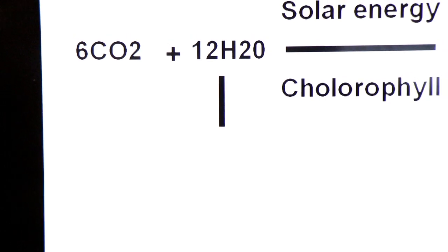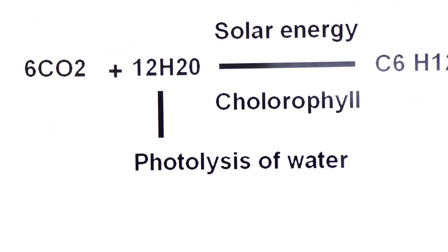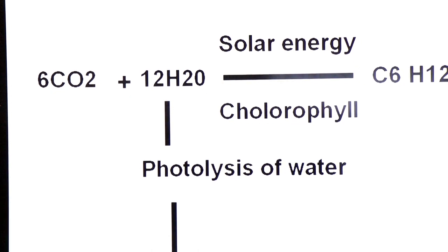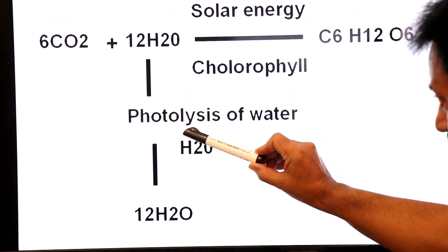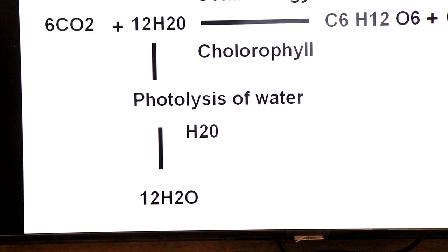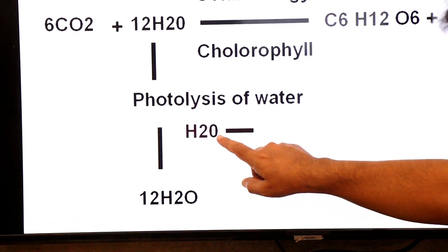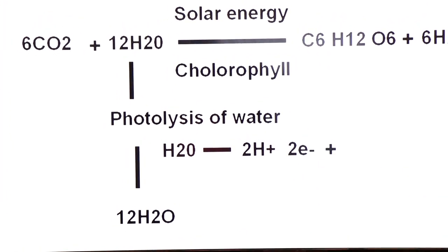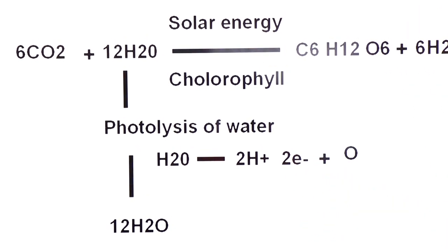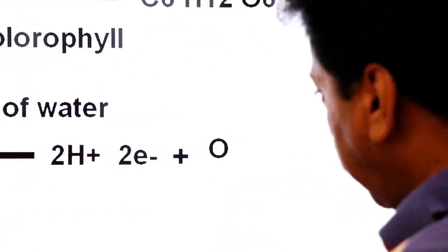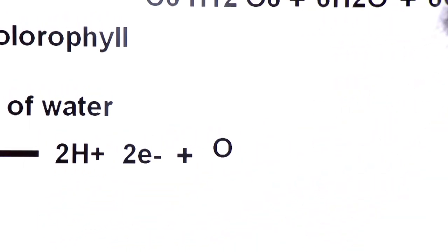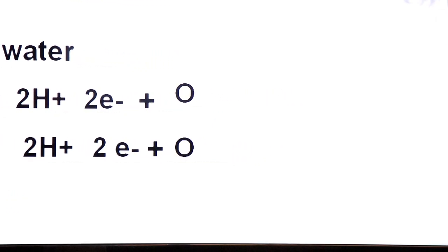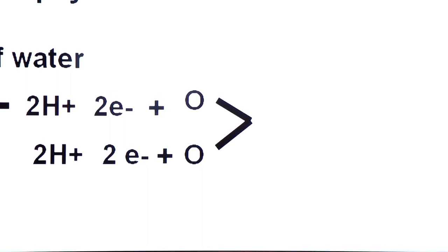Let's review photolysis of water — breakdown of water using the energy of sunlight. When one water molecule undergoes photolysis, it produces 2 protons, 2 electrons, and 1 atomic oxygen. This is not molecular oxygen; it is atomic oxygen. So from one water molecule we get 2 protons, 2 electrons, and 1 atomic oxygen. Breaking a second water molecule gives another 2 protons, 2 electrons, and 1 atomic oxygen. When these two atomic oxygens combine, we have one molecule of oxygen.